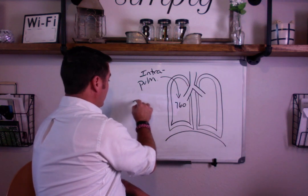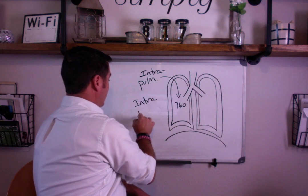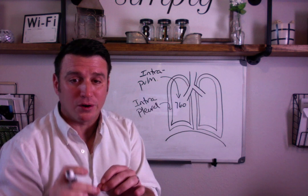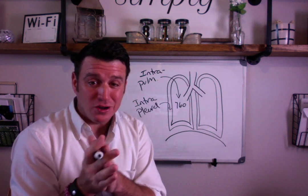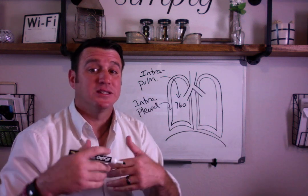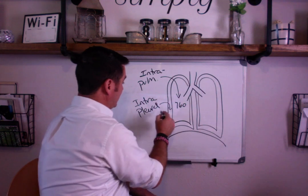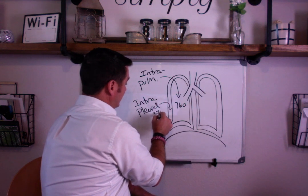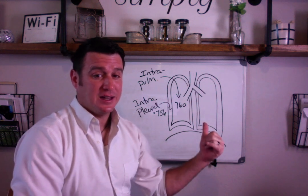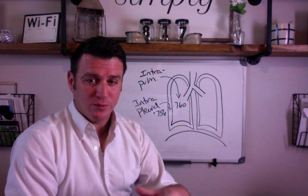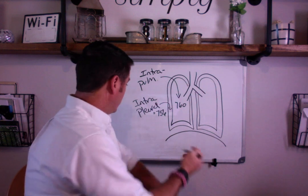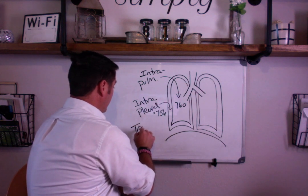When you say intrapleural pressure, you're talking about the pressure inside of the pleural space — that very small space between the visceral and the parietal pleura. It is typically approximately 756 millimeters of mercury, so slightly less than the intrapulmonary pressure. The difference between these two is minus four, and that is your transpulmonary pressure.